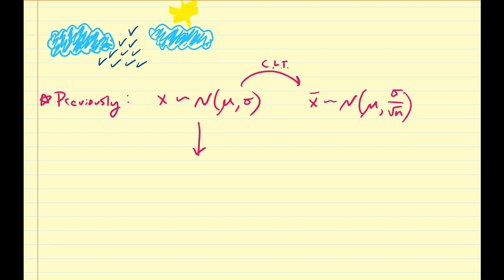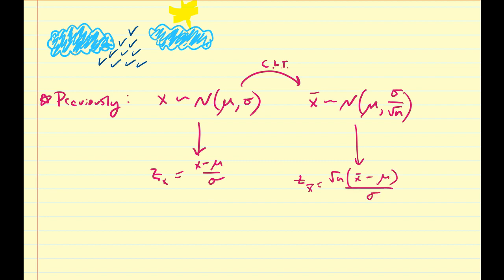So if we transform these via a z-score transformation, then the z-score for x is going to be x minus mu over sigma, and the z-score for a sample mean is z_x-bar equals the square root of n times x-bar minus mu divided by sigma. And of course, we transform these into what we call a z random variable or standard normal random variable, which is distributed according to a normal distribution with mean 0 and standard deviation 1.